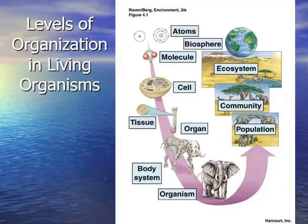The last topic in this lecture is the different levels of organization in living organisms. We start at the atomic level — atoms like hydrogen, carbon, and oxygen — which build up to molecules, then cells, tissues, organs, systems, individuals, populations, communities, and entire ecosystems. There is a linear flow of organization from one level to the next within all living organisms, and we'll explore this more in the second part of the lecture.